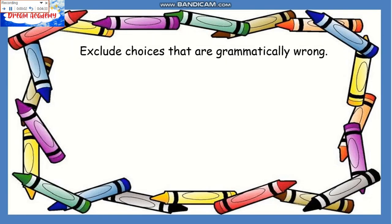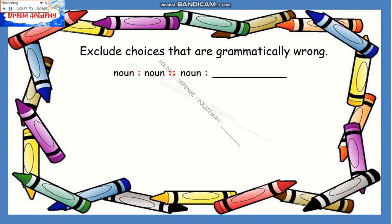Exclude choices that are grammatically wrong. The first instance involves nouns. If you are given a pair of nouns in the first pair of words, you should also have a pair of nouns in your second pair. We will read it as: noun is to noun as noun is to blank. All items are nouns, so the right answer must be a noun too. Exclude all choices that are not nouns.